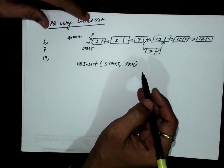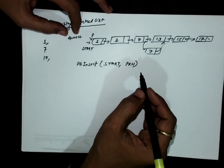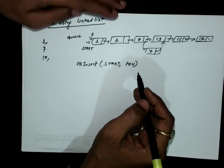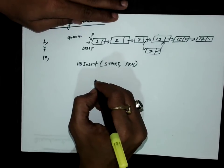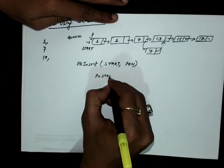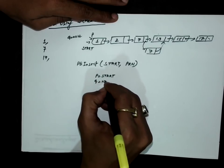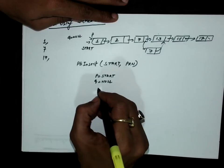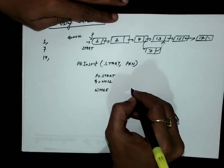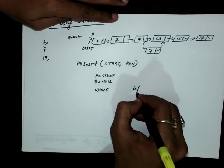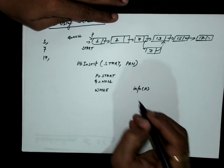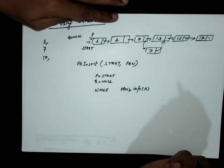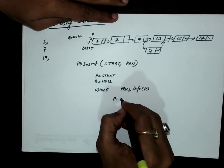We have to find out if PRN is greater than or equal to the information of P; if so, I will advance P to the next node. So P is initialized to start, Q is initialized to null, and while PRN is greater than or equal to info(P), I will update P to the next node.